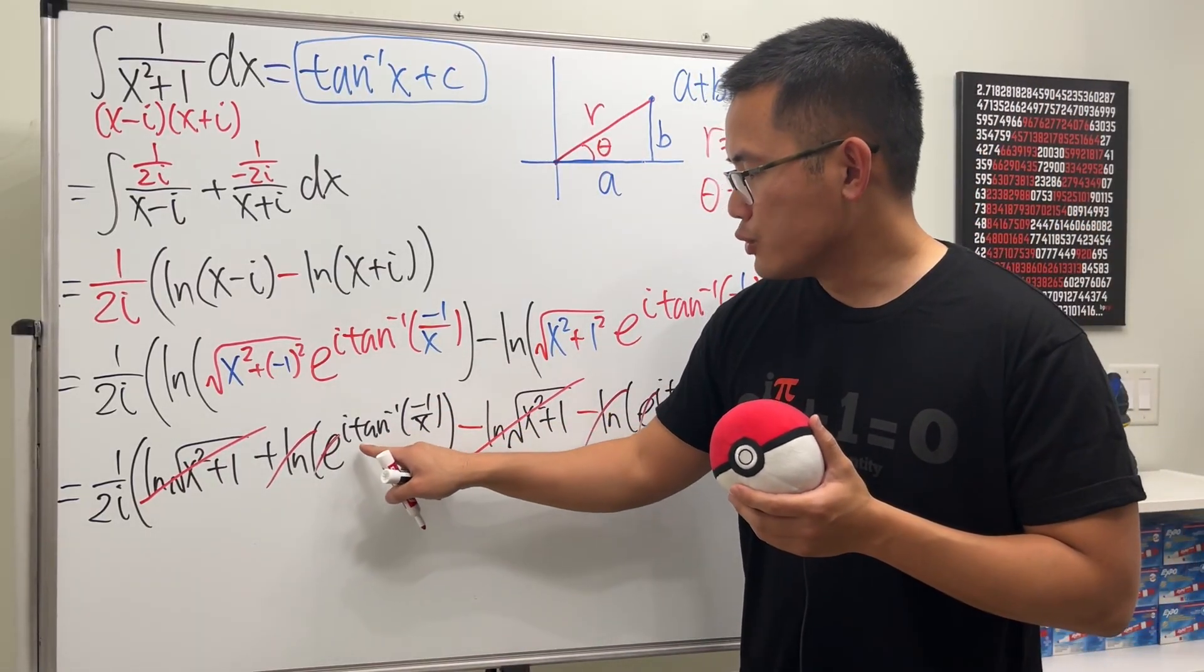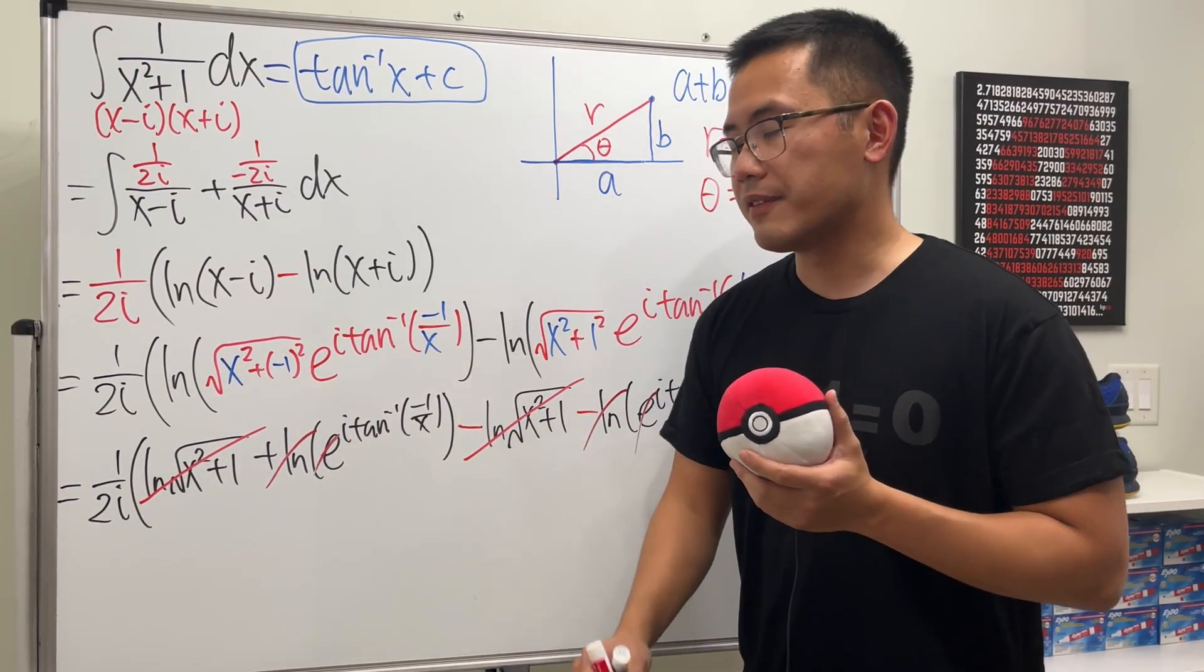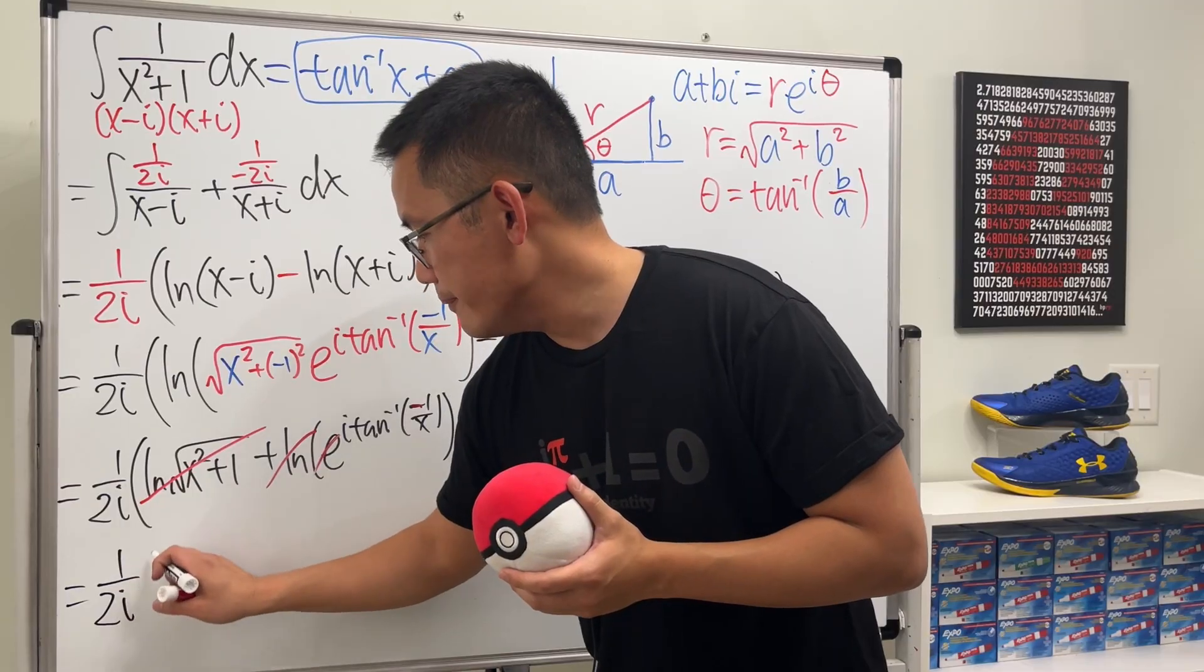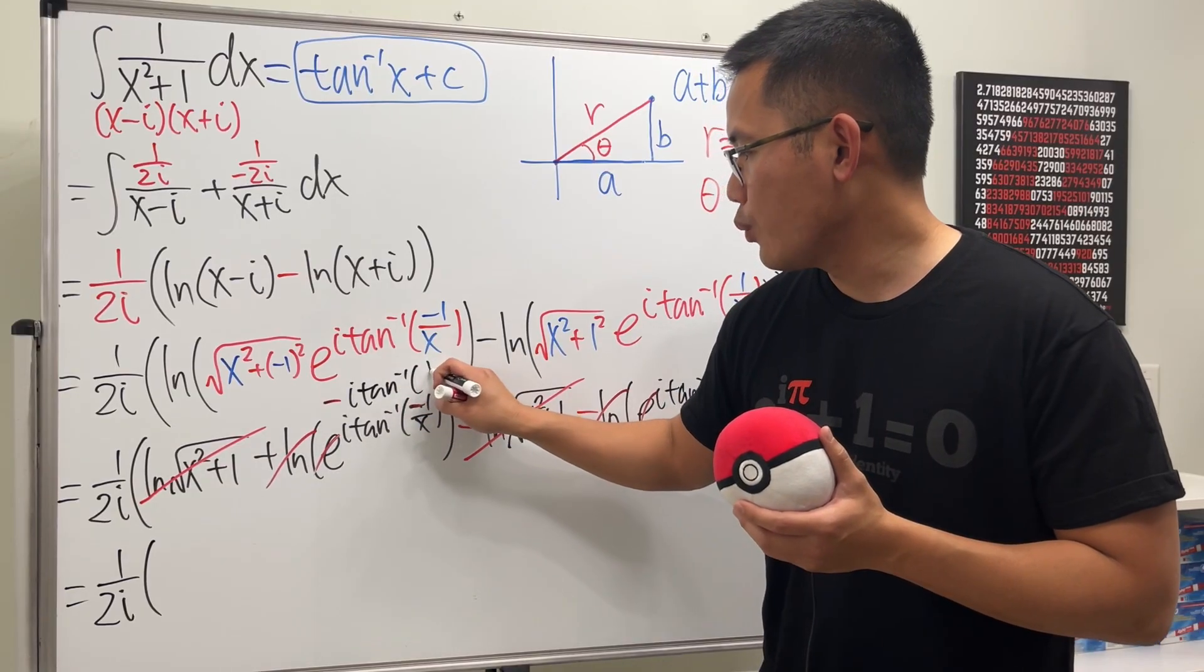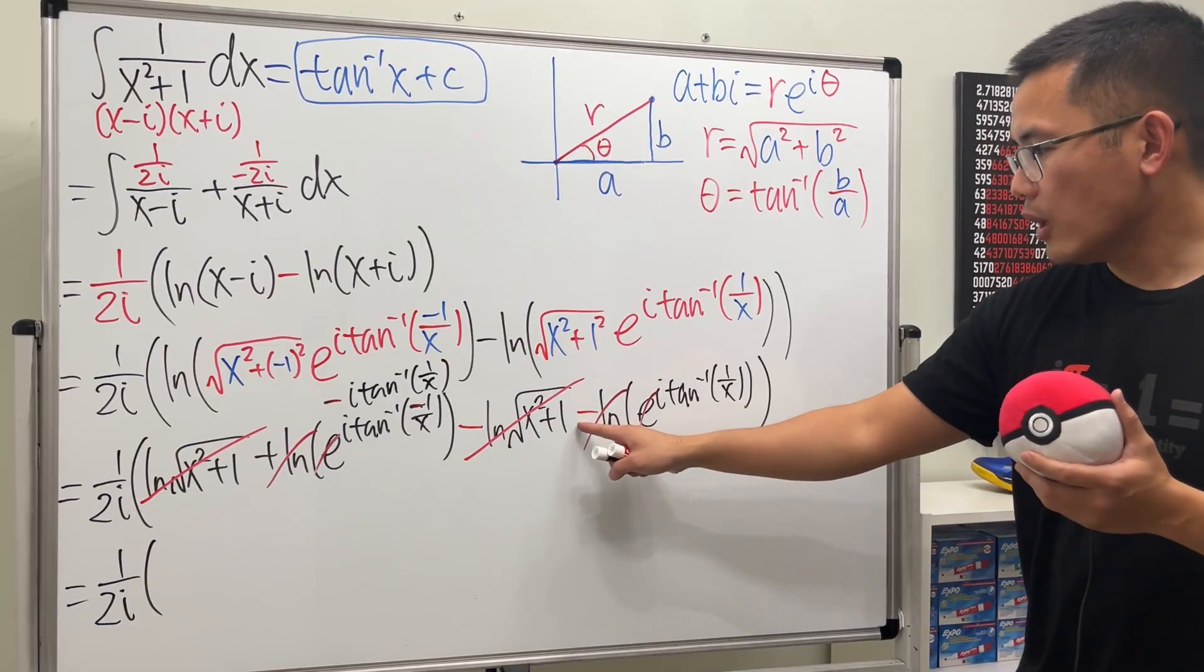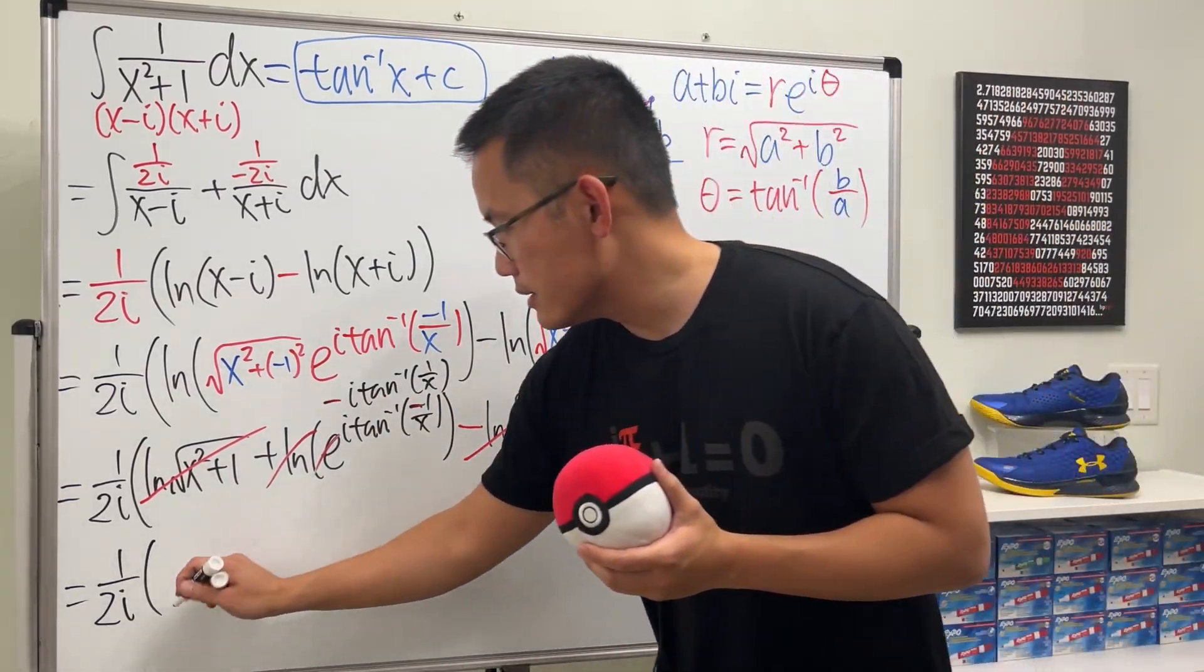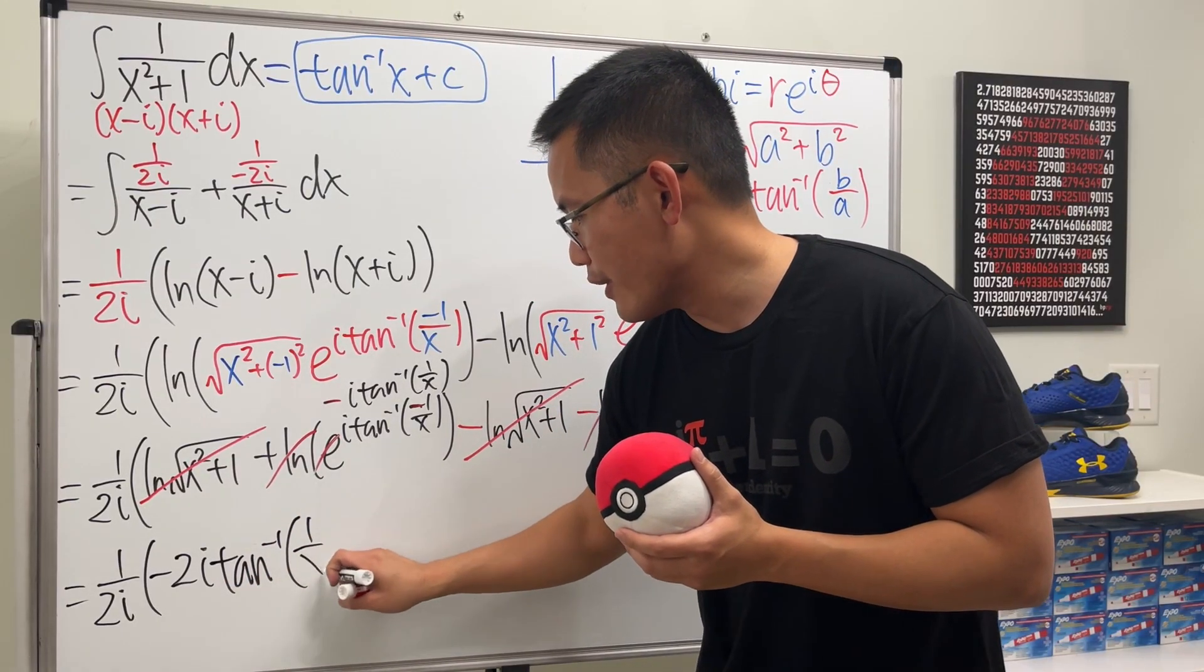And now, for this part, we just have i times inverse tangent of negative 1 over x. But inverse tangent is an odd function. So for this negative, we can put it on the outside. So this right here will give us 1 over 2i. And then we have this as negative i times inverse tangent of 1 over x. And the truth is, once we cancel this and that, this is also a minus i inverse tangent of 1 over x. So together, we have minus 2i and then inverse tangent of 1 over x.